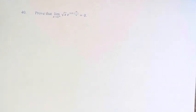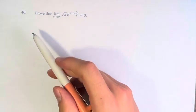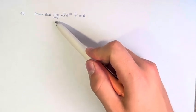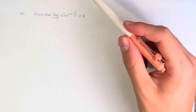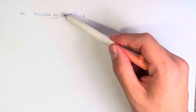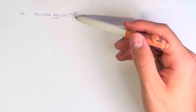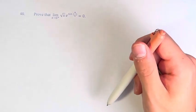Hello and welcome back to another video. In this problem we're asked to prove that the limit as x approaches 0 from the right of the square root of x times e to the sine of pi over x is equal to 0.